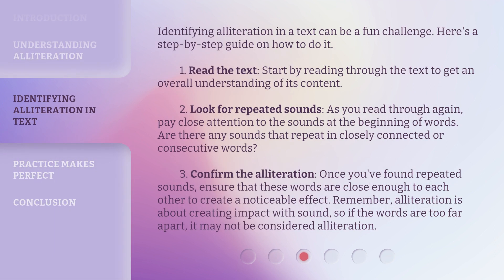Identifying alliteration in a text can be a fun challenge. Here's a step-by-step guide on how to do it. Step 1: Read the text. Start by reading through the text to get an overall understanding of its content. Step 2: Look for repeated sounds. As you read through again, pay close attention to the sounds at the beginning of words. Are there any sounds that repeat in closely connected or consecutive words?